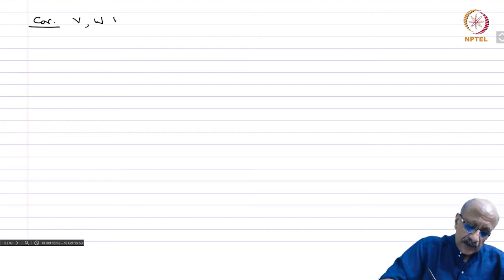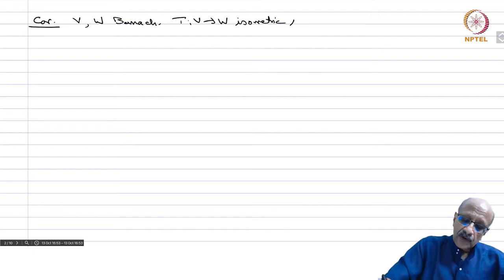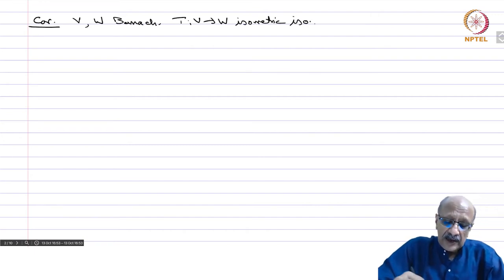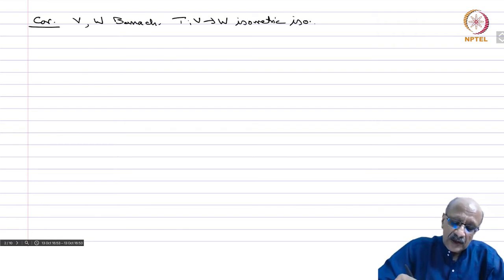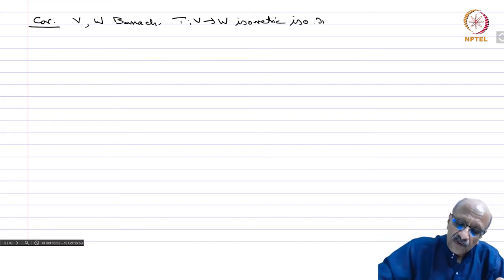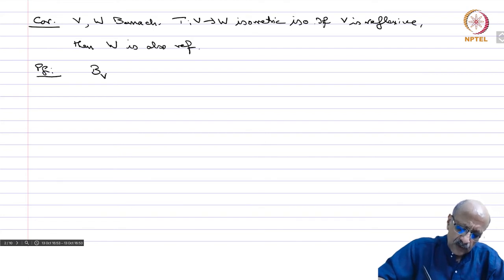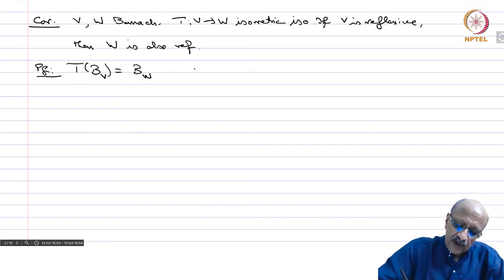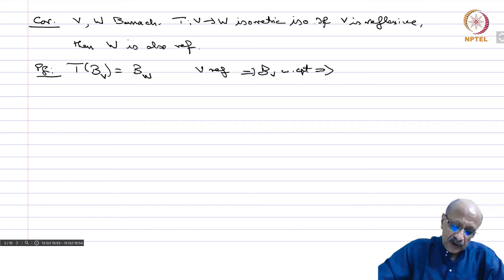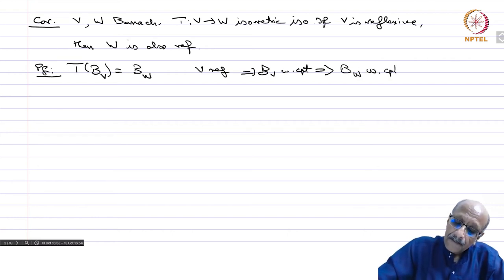Corollary: Let V and W be Banach and T from V to W an isometric isomorphism — that means T is an isomorphism, T and T inverse are continuous, it is 1-1 and onto, and T is an isometry preserving norms. Then if V is reflexive, W is also reflexive. T maps BV onto BW, and V reflexive implies BV weakly compact. T is continuous and therefore weakly continuous, so BW is weakly compact, which implies W is reflexive.